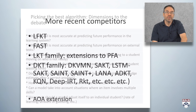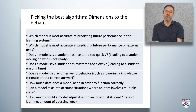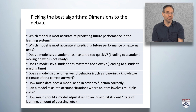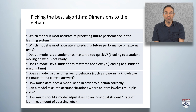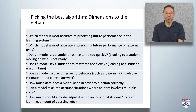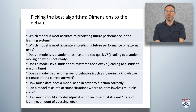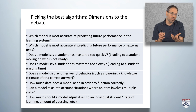In picking the best algorithm, there are many dimensions to the debate: Which model is most accurate at predicting future performance in the learning system? Which model is most accurate at predicting future performance on external tests? Does a model declare mastery too quickly, leading a student to move on who isn't ready? Does it declare mastery too slowly, leading a student to waste time? Does it display weird behaviors, such as lowering a knowledge estimate after a correct answer? How much data does it need? Can it handle items involving multiple skills? And how much should it adjust to an individual student's rate of learning, amount of guessing, and so on?